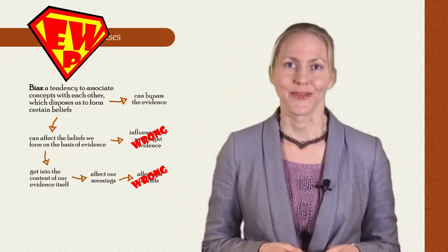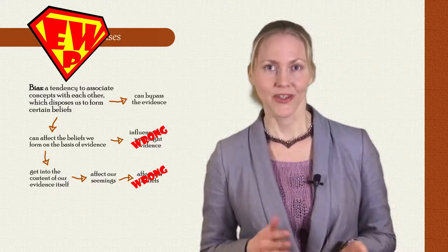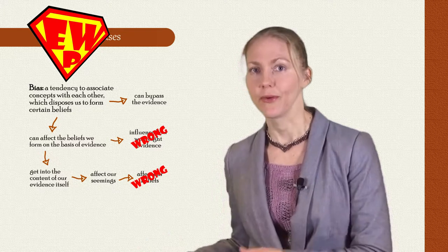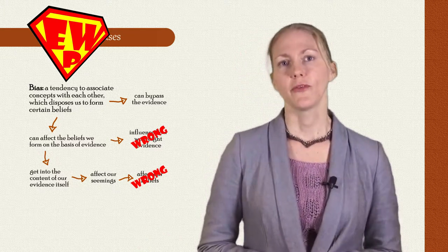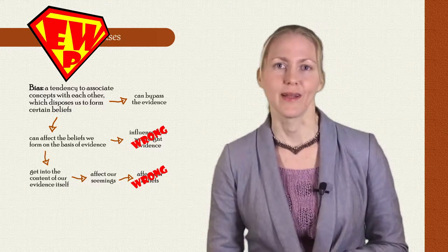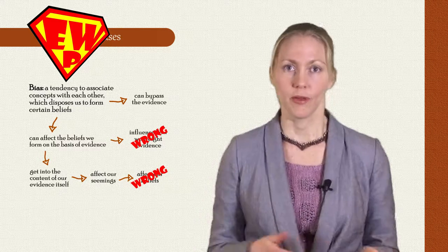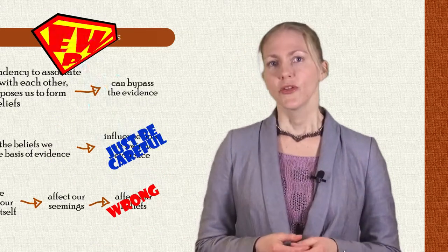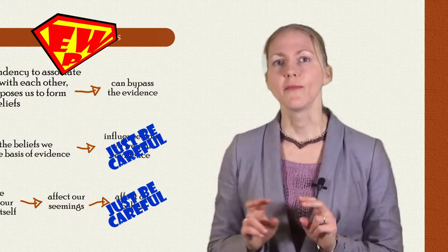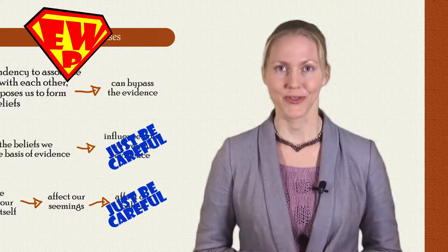The reason is that not all biases are bad. Our brains form biases because biases in turn help us form beliefs quickly when we need to, and often these beliefs are true. So if we associate umbrellas and rain, for example, we'll automatically form a true belief when we see rain that we should bring an umbrella. We won't need to think about it. So biases are like rules of thumb for our brains.